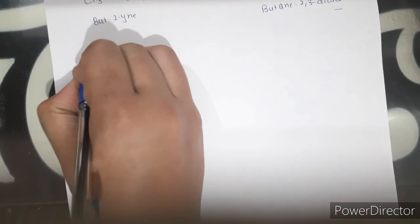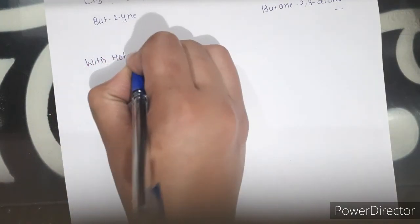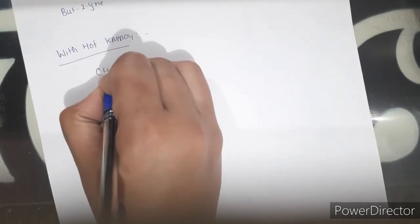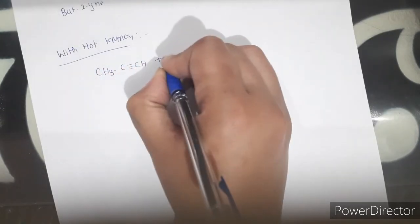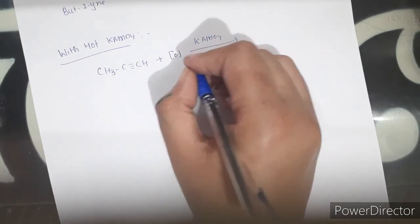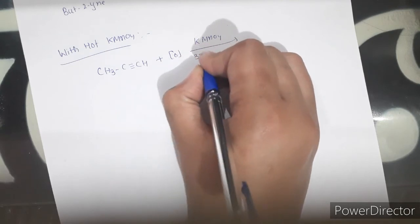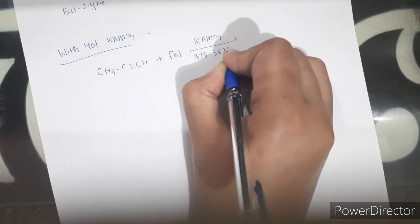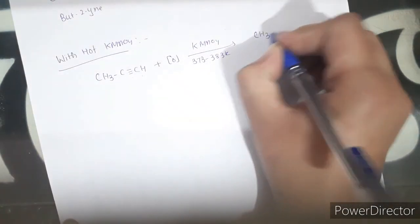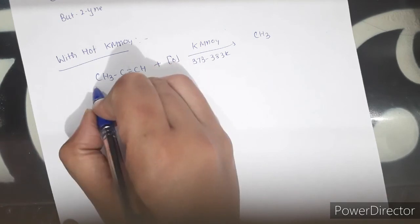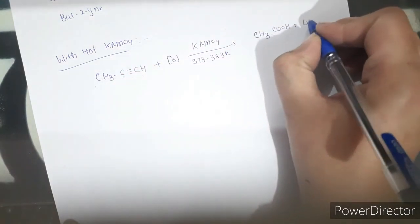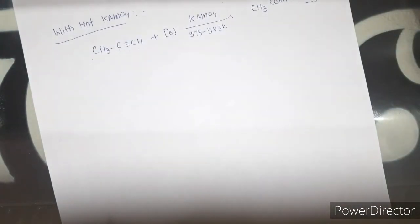With hot KMnO₄, the triple-bonded carbon directly attached to hydrogen (≡CH) is completely oxidized to give carbon dioxide and water. The triple-bonded carbon attached to any alkyl group (≡CR) is oxidized to give a carboxylic acid.